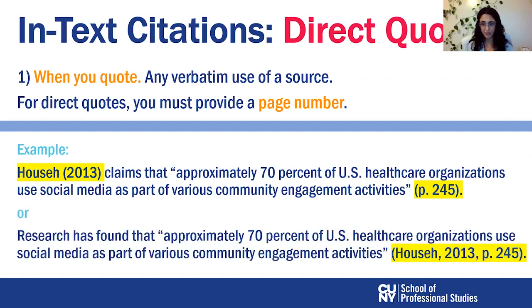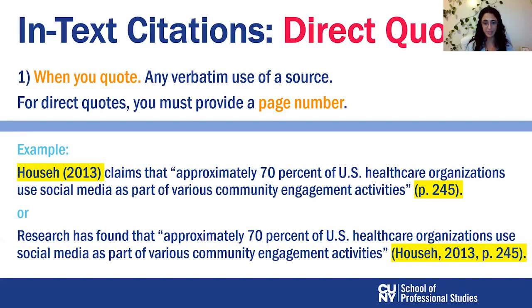Another way to indicate a direct quote is by putting all the information in one parenthesis. So the sentence reads: research has found that approximately 70% of US healthcare organizations use social media as part of various community engagement activities, end quote. Then I put Hause, comma, the year, comma, p. space and the page number, all in the same parenthesis. There's no difference between these two examples in terms of acceptability — you're free to choose whatever works best in your paragraph.